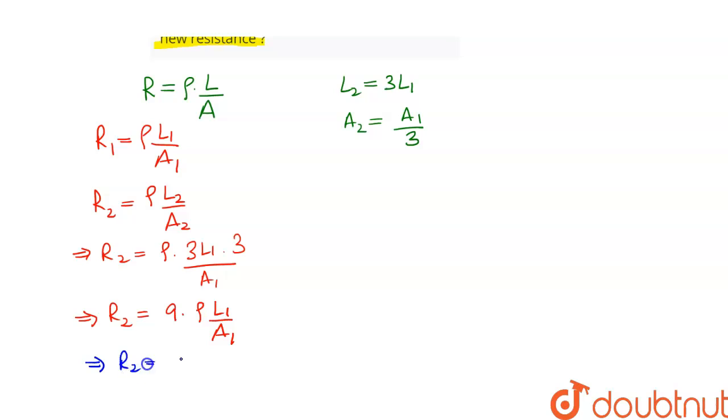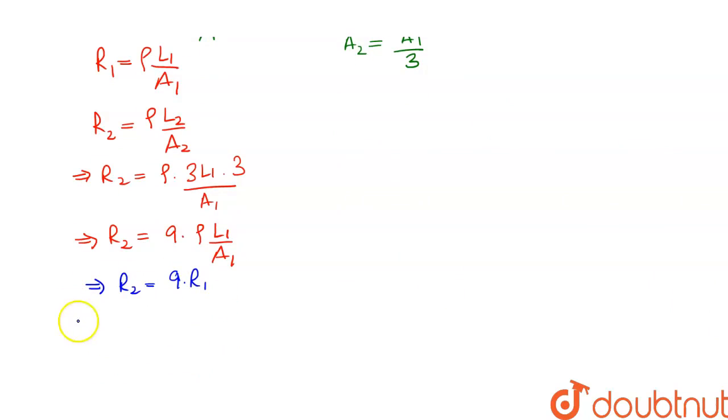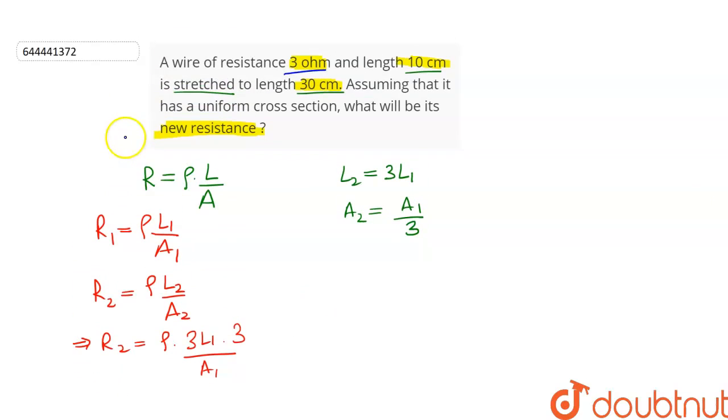R2 is equal to 9 times R1, and it is given that R1 is equal to 3 ohms. So let us put that value. We will get R2 is equal to 9 into 3, which is 27 ohms. So the value of new resistance is equal to 27 ohms.